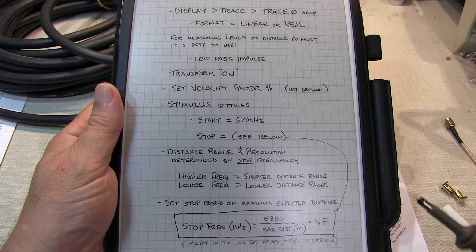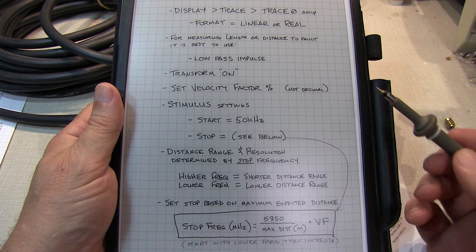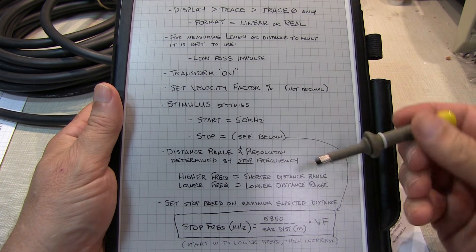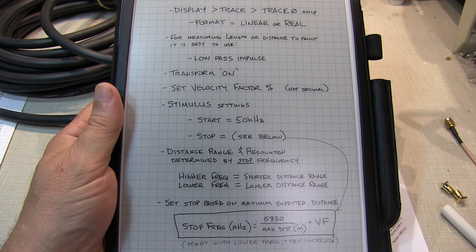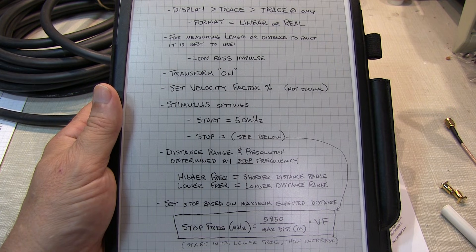That's the simple process of measuring the length of coax or distance to fault. I'll make these notes available in a PDF linked down below the video on the YouTube page. Now let's move on to part two, looking at transmission lines and the Smith chart.